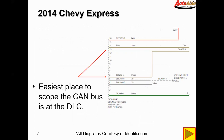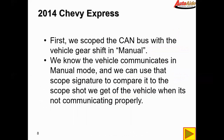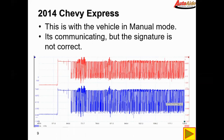The easiest place to check it is at the DLC instead of rummaging through the wiring harness — we can get it right at the DLC on pin 6 and 14. So we first decided to scope the CAN bus with the vehicle in manual mode. We know the vehicle communicates in manual mode and we can use that scope signature to compare it to the shot we get when the vehicle is not communicating properly. This is the vehicle in manual mode — it is communicating here, but that signature doesn't look correct either.